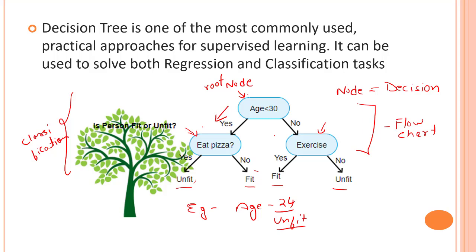What happens is that data is run completely through the entire tree by answering true/false questions until it reaches the leaf node. Whenever you pass in some new data, it moves through the complete dataset into this node and checks if the condition is true or false. If true it moves one way, if false the other way, through eat-pizza and exercise nodes — it is essentially a flowchart using simple true and false notations.